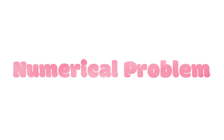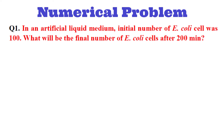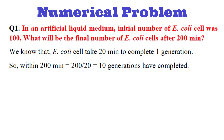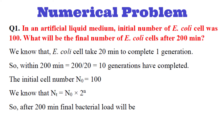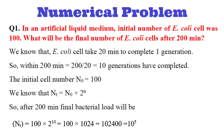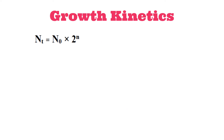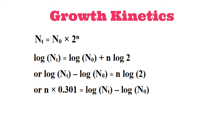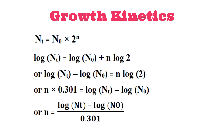Before moving to the next step, let's solve one numerical problem. In an artificial liquid medium, the initial number of E. coli cells was 100. What will be the final number of E. coli cells after 200 minutes? We know E. coli takes 20 minutes to complete one generation, so within 200 minutes it will complete 10 generations. The initial cell number N₀ is 100. Using this equation, after 200 minutes the final bacterial load will be 10 to the power 4. Our second task is to simplify this equation — putting log on both sides, log 2 to the power n means n log 2 and log 2 is 0.301. Finally, we have derived an equation to calculate the number of generations using the initial and final number of bacterial cells.